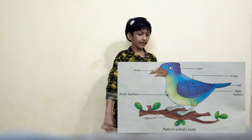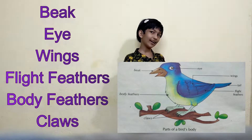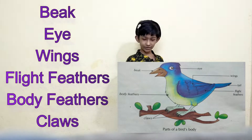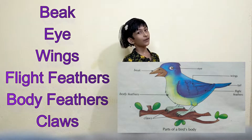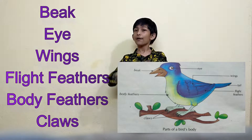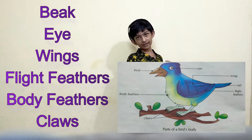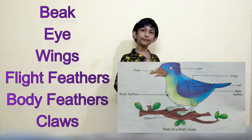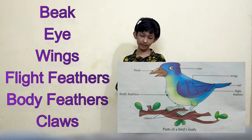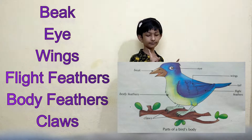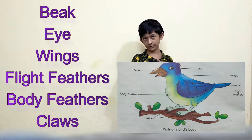Birds have beaks, eyes, wings, flight feathers, down feathers, and claws.